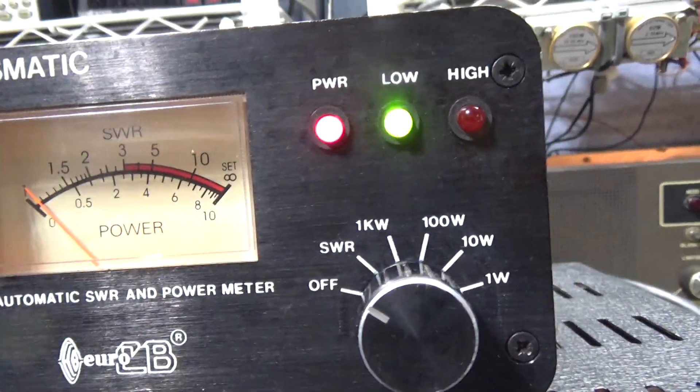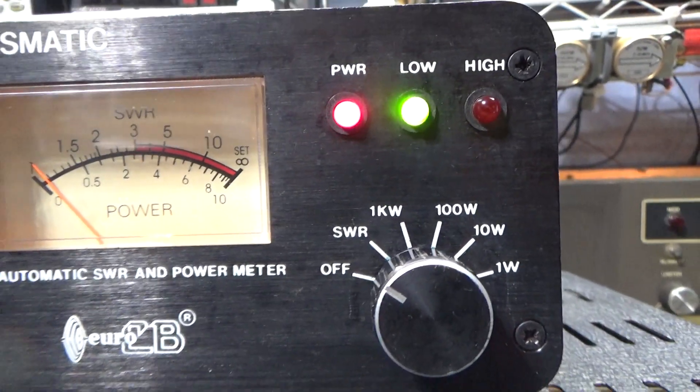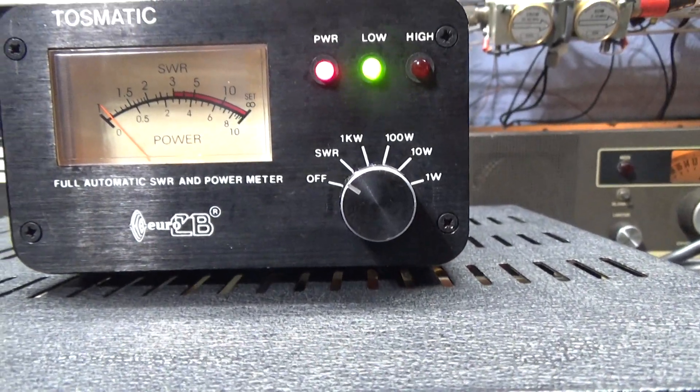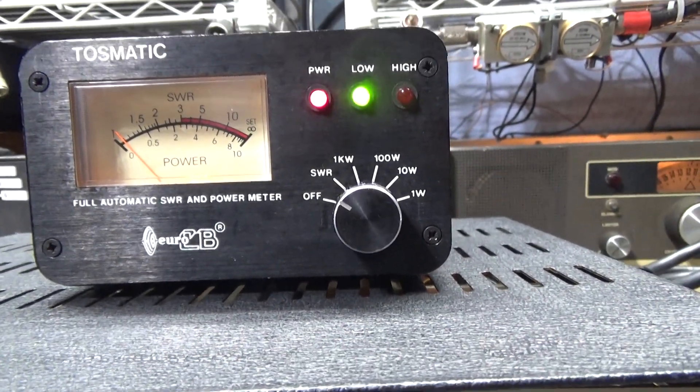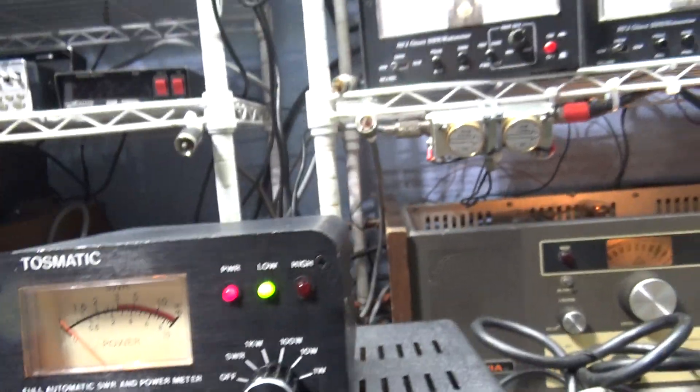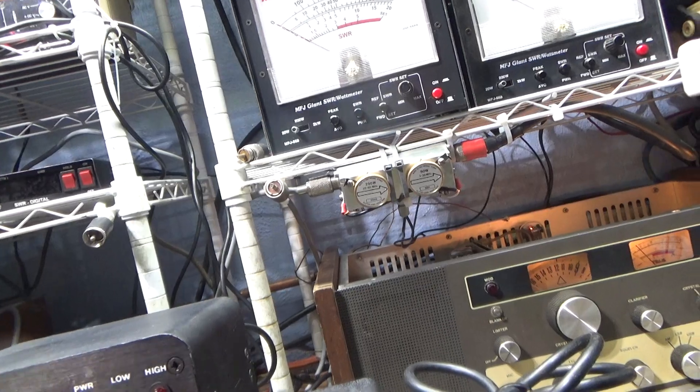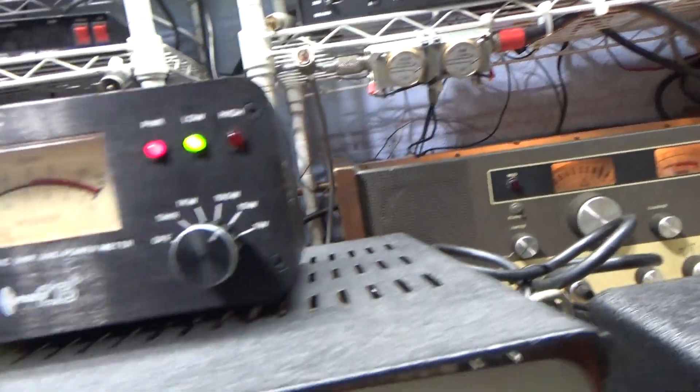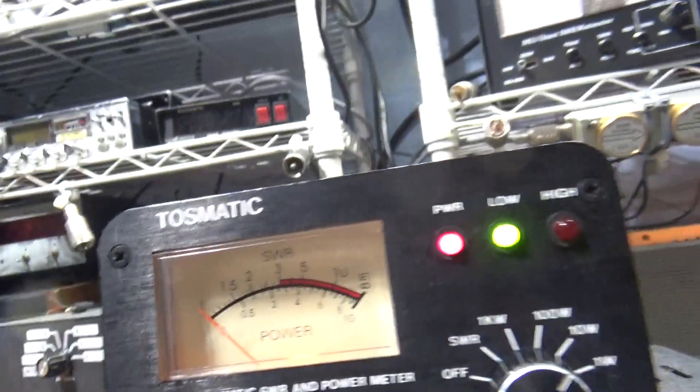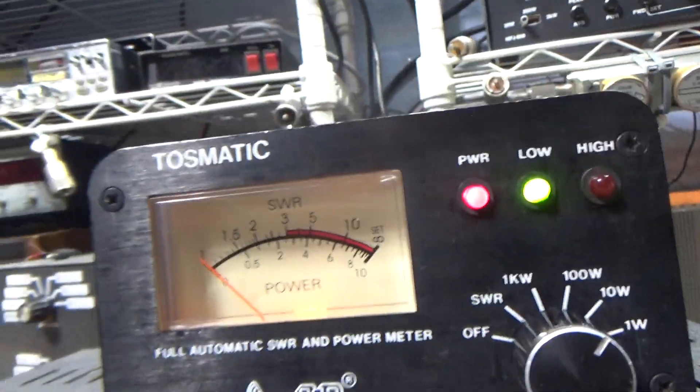This meter has one watt, 10 watt, 100 watt, 1kw scale, SWR, then on and off. This watt meter is an average reading watt meter, does not read peak or RMS, so it's very stingy. The dead key is pretty accurate, but the swing, if you'd like to see swing and a lot of watts, this ain't your meter.